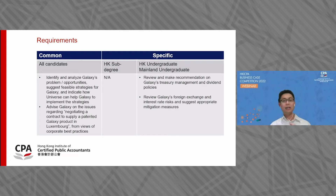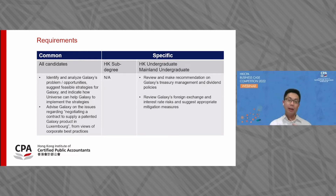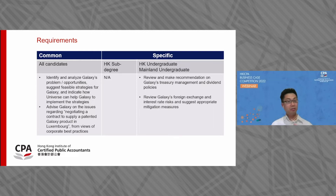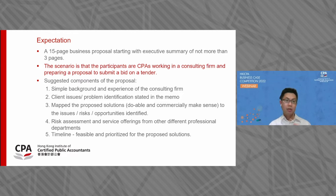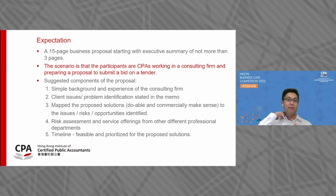For Hong Kong undergraduate and mainland undergraduate students, you must review and make recommendations on Galaxy's treasury management and dividend policy using relevant information from the case, making reasonable assumptions in your strategies. You also need to review Galaxy's foreign exchange and interest rate risks and suggest appropriate mitigation measures. Your report should be a 15-page business proposal starting with an executive summary of no more than three pages, prepared as if submitting a bid from a consulting firm.